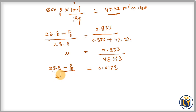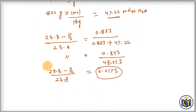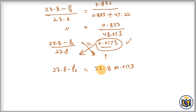So we have: (23.8 minus ps) divided by 23.8 equals 0.0173, which is the relative lowering of vapor pressure — the ratio of the lowering of vapor pressure to the vapor pressure of the pure solvent equals the mole fraction. From this equation we can calculate ps, the vapor pressure of water in the solution, by cross multiplication: 23.8 minus ps equals 23.8 multiplied by 0.0173.